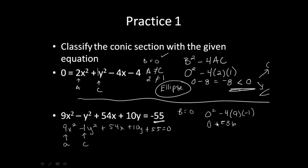Well, minus a negative turns into plus a positive, so I get 36. So, in this case, my discriminant ended up being greater than zero, which automatically leads me to a hyperbola.